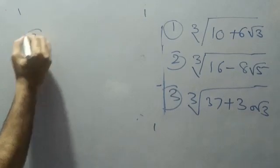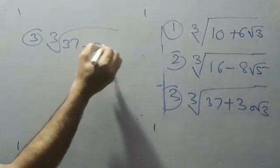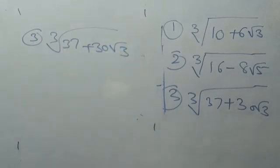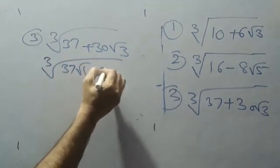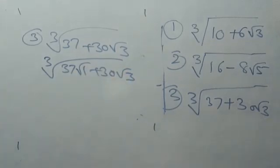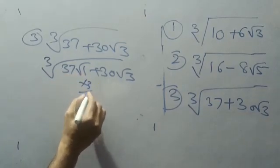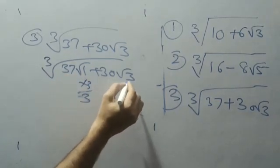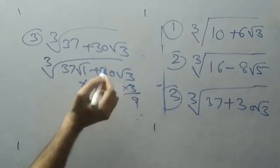I will take the third example: cube root of 37+30√3. Here, first I will start with 1. If you take with 1, this is 37√1 + 30√3. When you multiply this with 3, here 1×3 is 3, this 3×3 is 9. 9+1 is not 37, 3+3 is not 30. Not satisfied. So you have to convert this one.